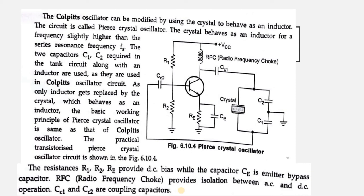The Pierce crystal oscillator is similar to the Colpitts oscillator. In the Colpitts feedback circuit, two capacitances are connected in parallel with one inductor; that inductor is replaced by the crystal here. The Colpitts oscillator can be modified by using the crystal to behave as an inductor. The crystal behaves as an inductor for a frequency slightly higher than the series resonant frequency Fs. The two capacitors C1 and C2 required in the tank circuit are used as in the Colpitts oscillator — only the inductor is replaced by the crystal.